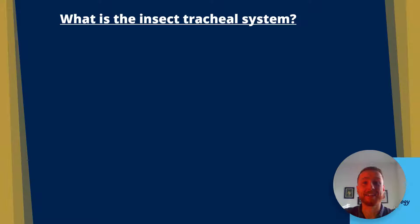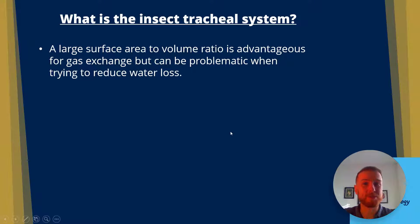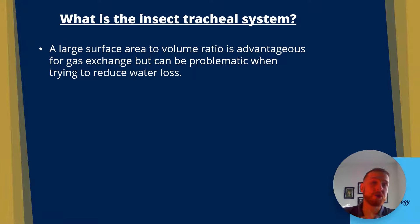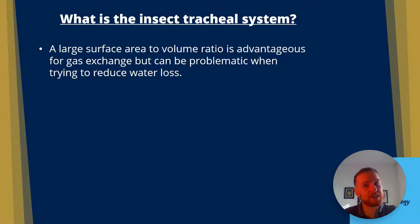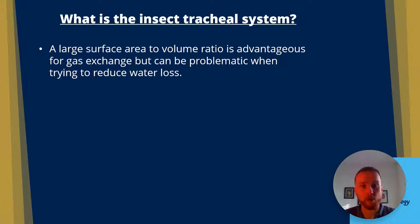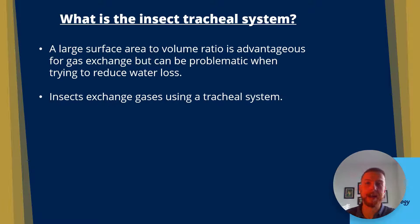So what is the insect tracheal system? Well, this fascinating little system gives insects a large surface area to volume ratio, which is going to allow them to exchange gases at an optimal rate. The disadvantage of this, however, is that it also means they can lose water very quickly unless they have some of the adaptations that I'm going to talk to you about in a moment.